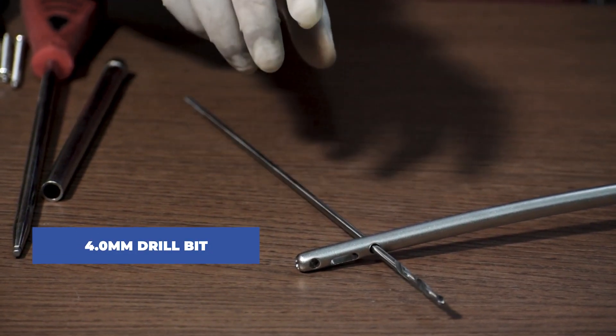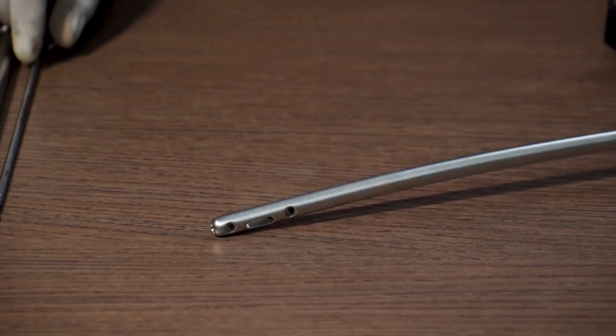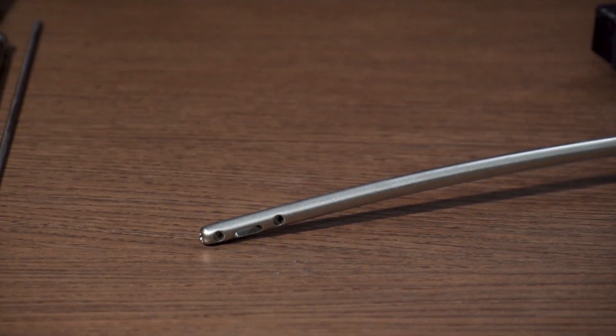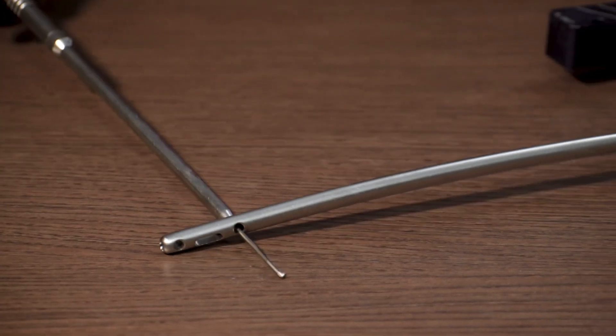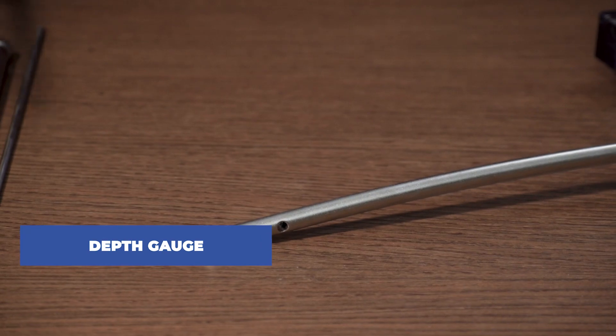So with the 4mm drill bit, we will drill a hole. After drilling, we will take a depth gauge to measure the length of the interlocking bolt required to be fixed.